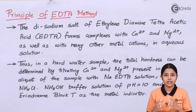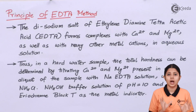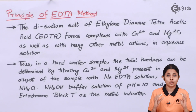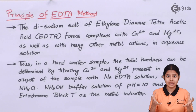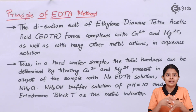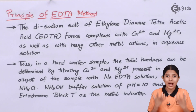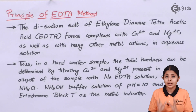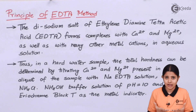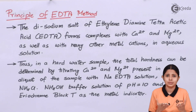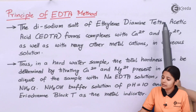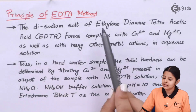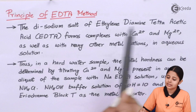Now let us see the principle of the EDTA method. We saw what EDTA is, how it looks, the nitrogens with lone pairs, and the metal ions Ca2+ or Mg2+. We saw how the ligand — all the nitrogens and oxygens present in EDTA — will go and attack the metal ion. Now the disodium salt of ethylene diamine tetraacetic acid, EDTA.